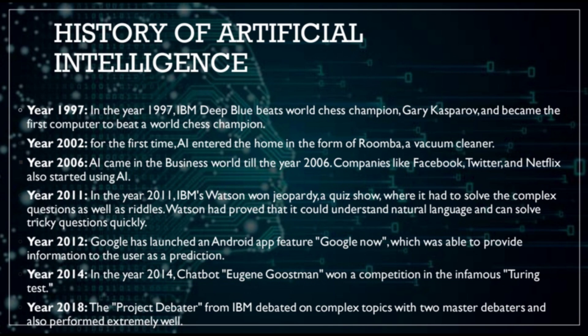In the year 2002, AI entered the home in the form of Roomba, a vacuum cleaner. In the year 2006, AI came into the business world. Companies like Facebook, Twitter, and Netflix also started using Artificial Intelligence.